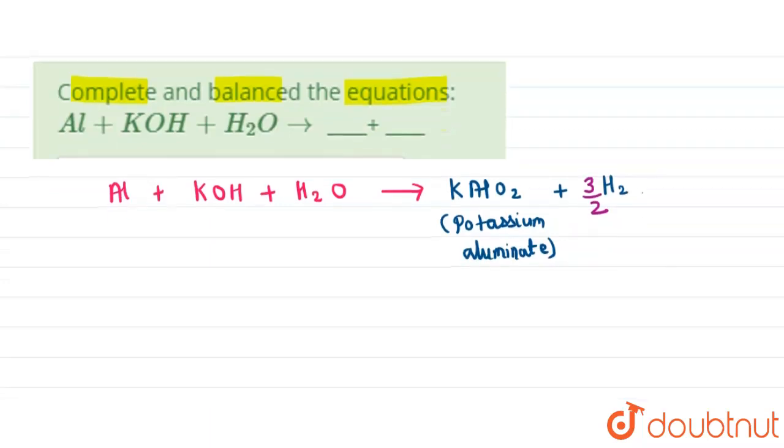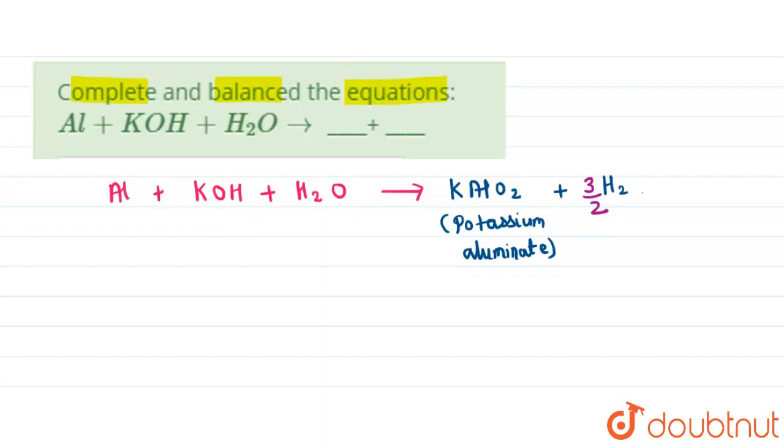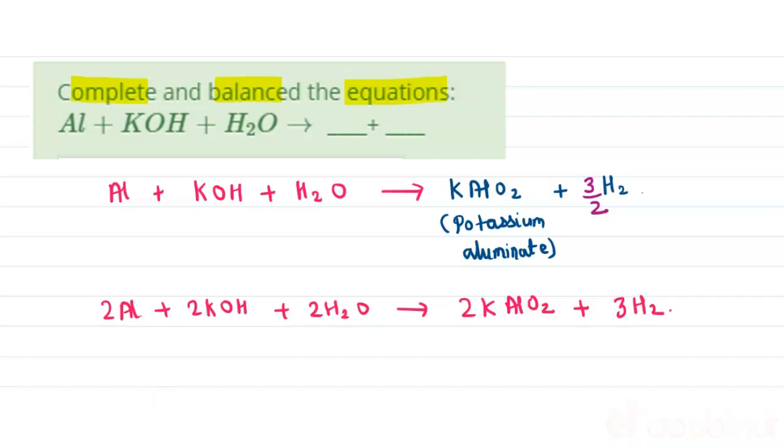The balanced equation: 2Al + 2KOH + 2H2O → 2KAlO2 + 3H2. I hope that was clear. Thanks for watching, have a nice day!